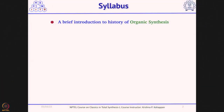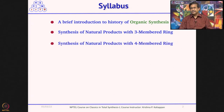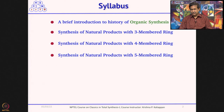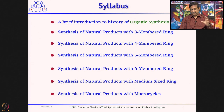The syllabus for this course starts with a brief introduction to the history of organic synthesis, and then we will go through synthesis of natural products ring-size wise. We will discuss total synthesis of natural products having 3-membered rings, then 4-membered rings, then 5-membered, 6-membered, then medium-size rings, and also a few natural products which have macrocycles. This is the overall syllabus of this particular course.